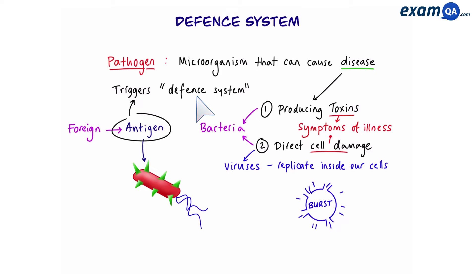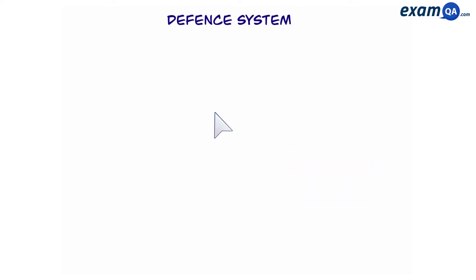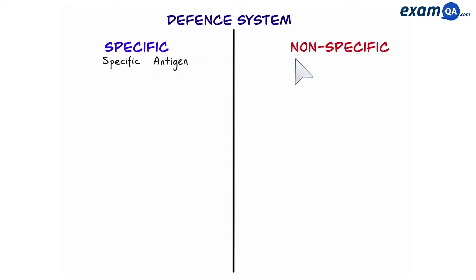A foreign antigen triggers our defense system, or immune system, and also causes the production of antibodies. Our defense system is split into two parts: specific and non-specific. The specific, as the name suggests, only works for specific antigens, whereas the non-specific does not discriminate based on antigen — it will kill all pathogens. Let's start with the non-specific.